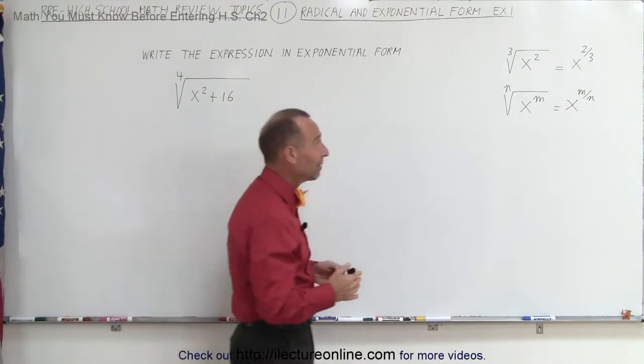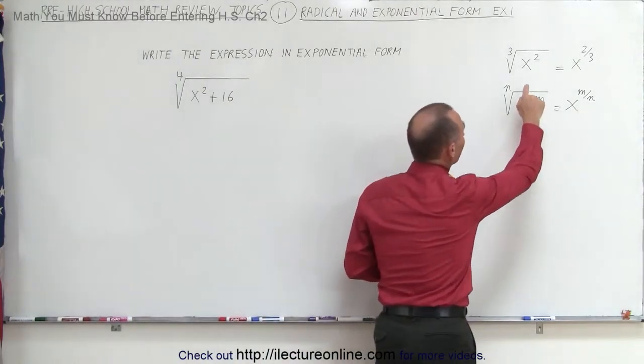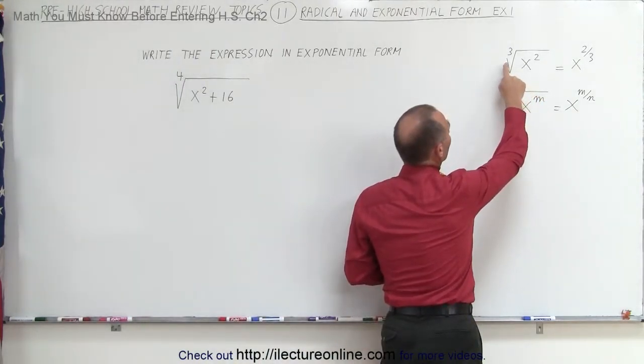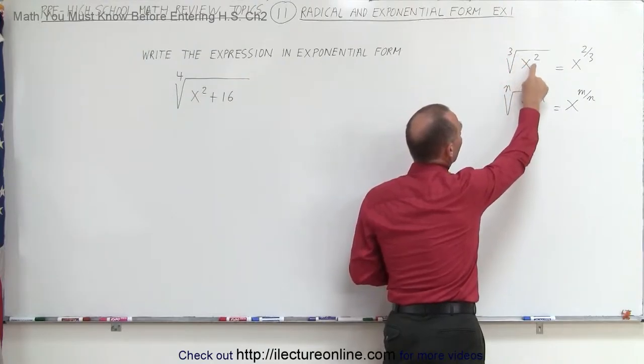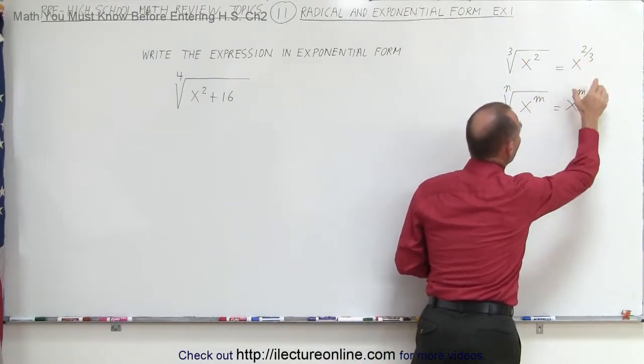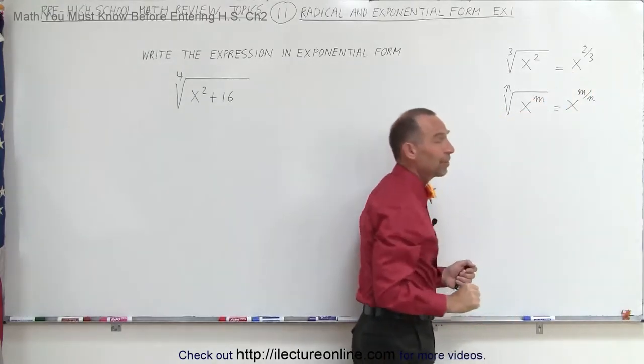In simple terms, if we have the variable x, we can write it like this: the cube root of x squared, which can also be written as x to the two-thirds power. That means exactly the same thing.